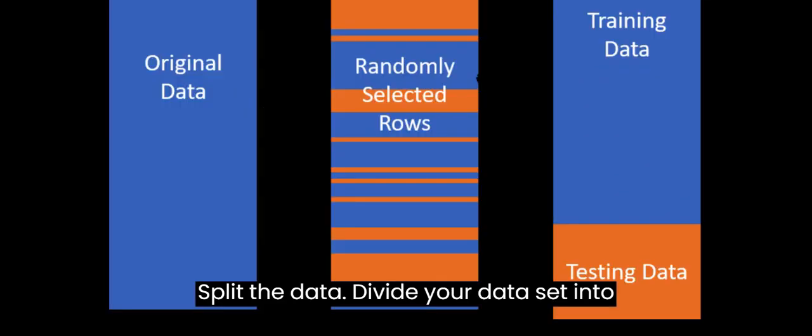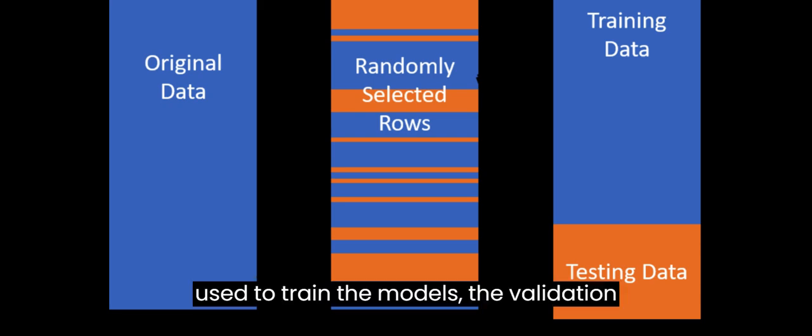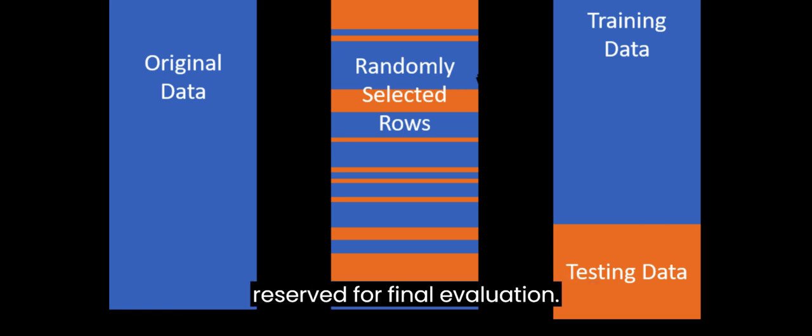Split the data. Divide your dataset into three subsets: training, validation, and test. The training set is used to train the models, the validation set is used for hyperparameter tuning and model selection, and the test set is reserved for final evaluation.